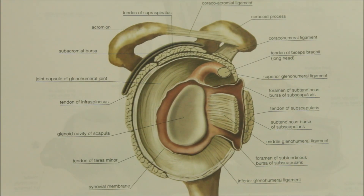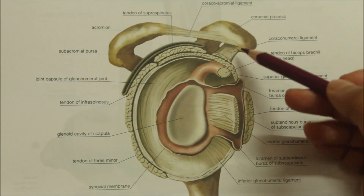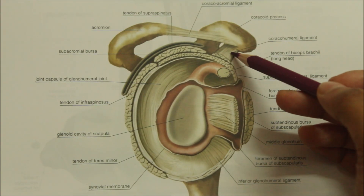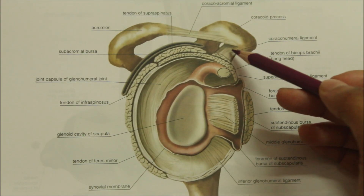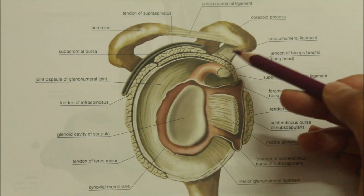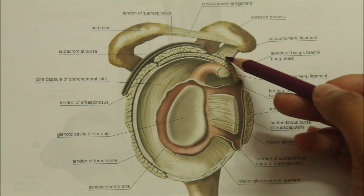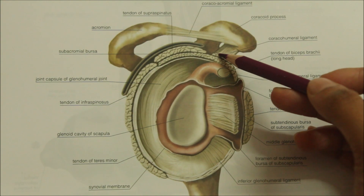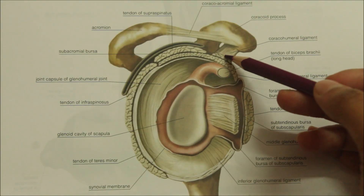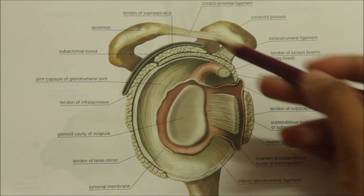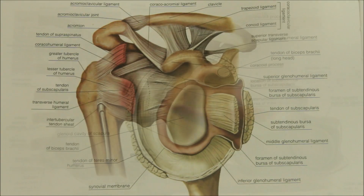The second ligament is the coracohumeral ligament. It extends from the root of the coracoid process to the neck of the humerus, opposite the greater tubercle, and gives strength to the capsule.